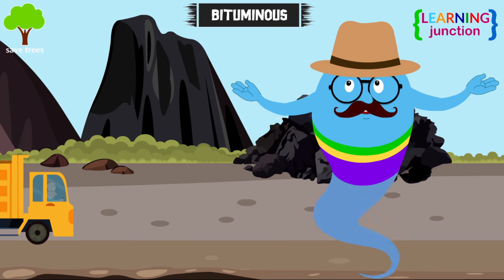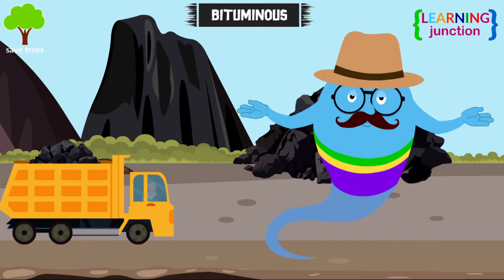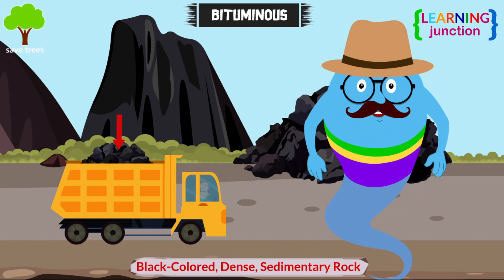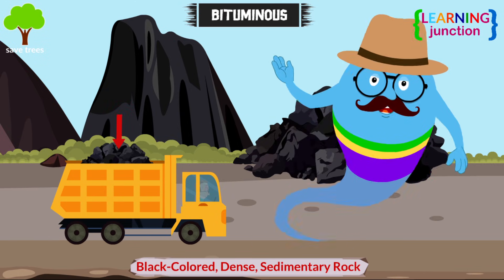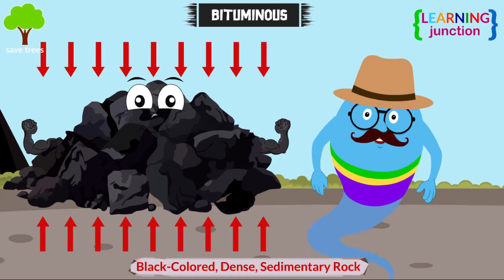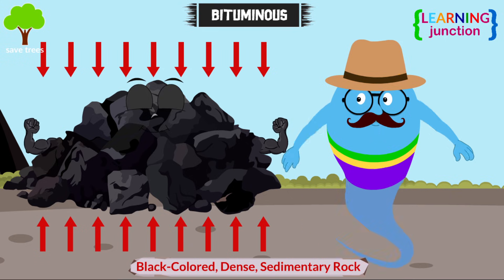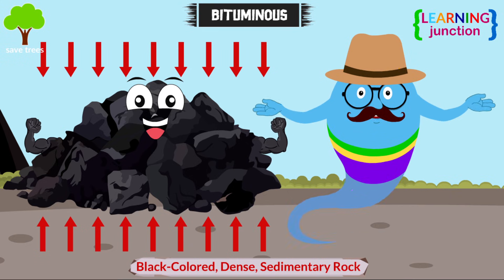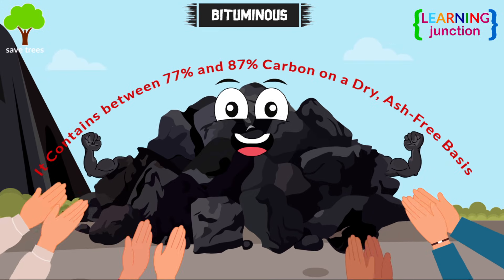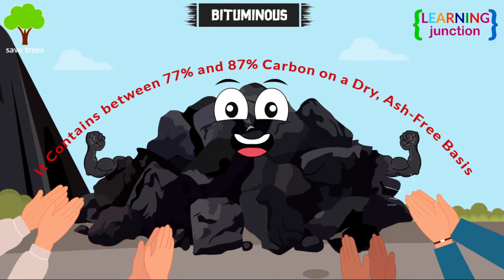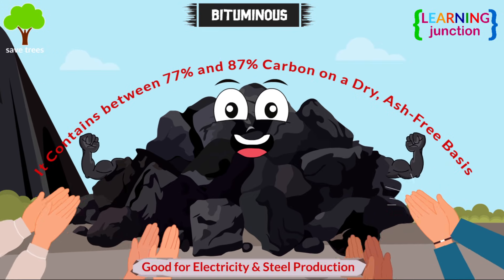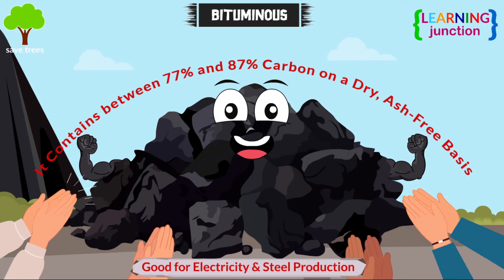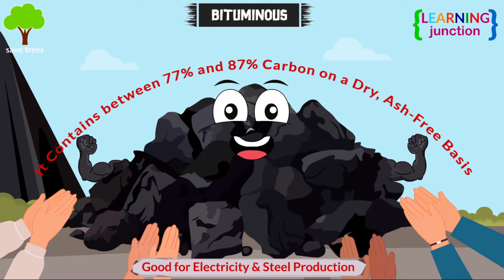Bituminous coal — this black-colored coal is a dense black sedimentary rock that was formed under high pressure and heat, making it rich in carbon and good for electricity and steel production.